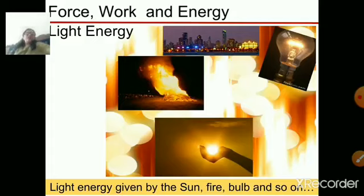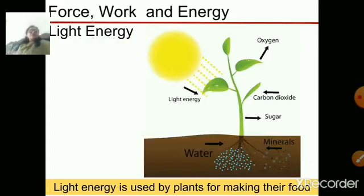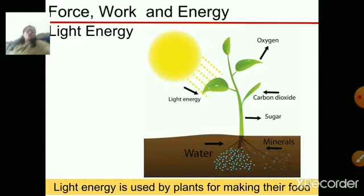From the sun we get light in the daytime. Plants use the light energy of the sun to make their food, as you very well know, in the process of photosynthesis. In the picture, you can see the light energy — the bulb is glowing, giving light. Even by burning a candle, you get light energy. Plants use the light energy of the sun to make food in the process of photosynthesis.